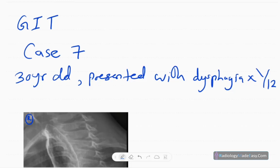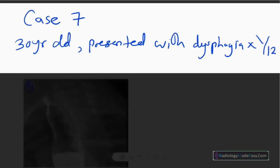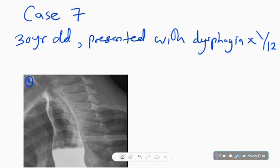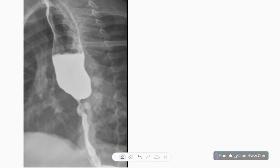Hello, welcome back everyone. This is case number seven in GIT contrast studies. Today our patient is a 30-year-old patient presented with dysphagia for one month duration. This is the anteroposterior spot radiograph of barium swallow series.